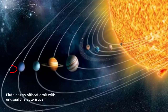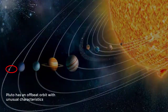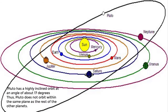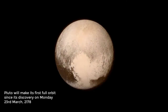Second, Pluto has an offbeat orbit. Its orbit is very strange and has unusual characteristics. It has a highly inclined orbit at an angle of 17 degrees, meaning Pluto does not orbit within the same plane as the rest of the eight planets. It sometimes switches places with Neptune to orbit closer to the Sun.